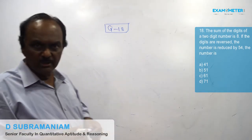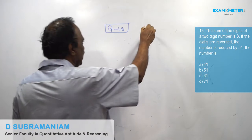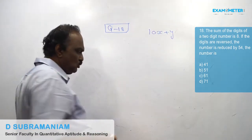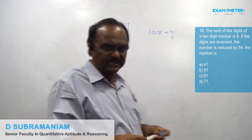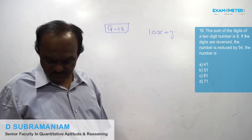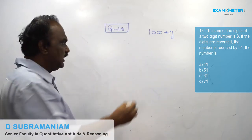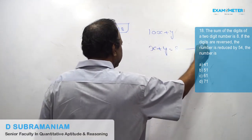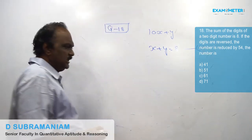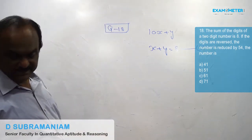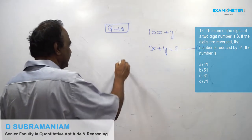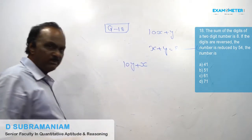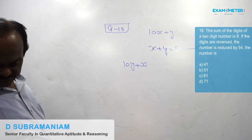For the 18th problem, take the two-digit number as 10x + y. The sum of the two digits is 8 — this is the first equation. When the digits are reversed, the new number is 10y + x, which equals 10x + y minus 54.